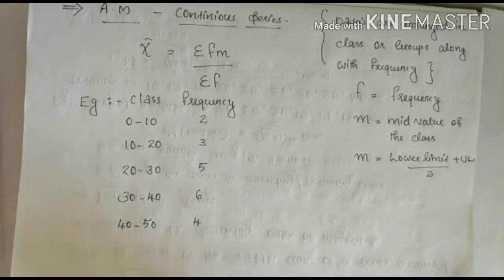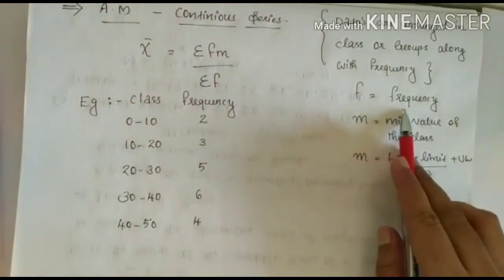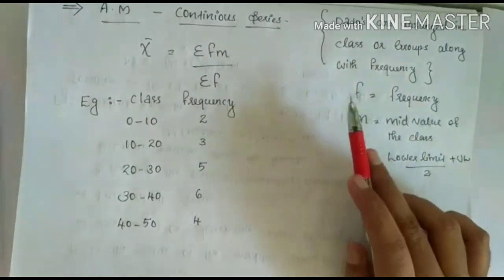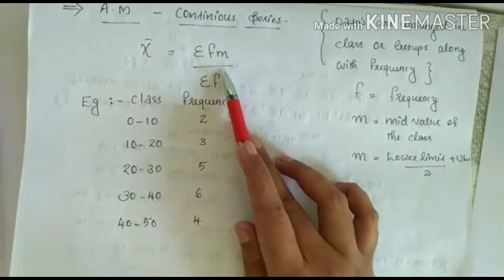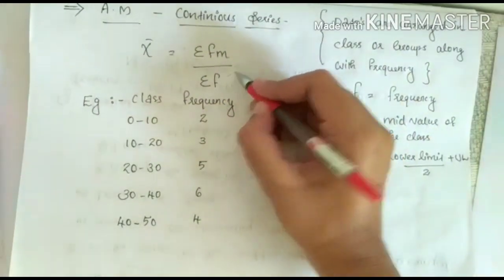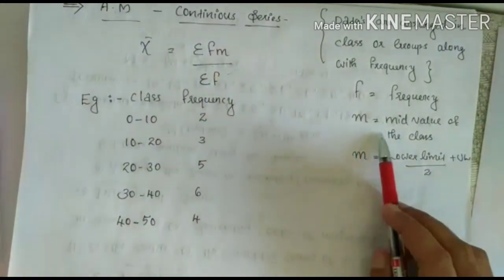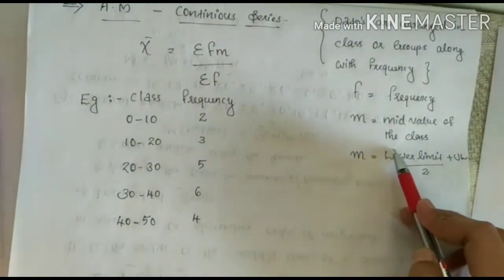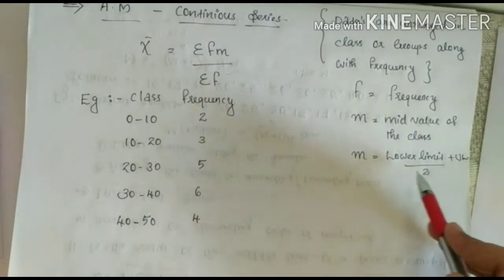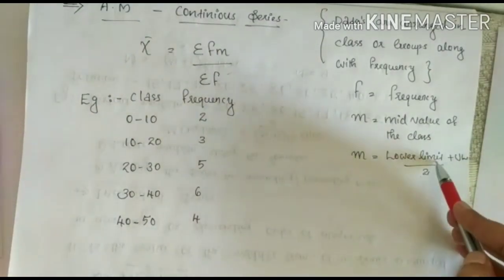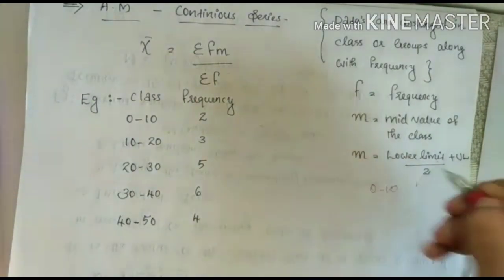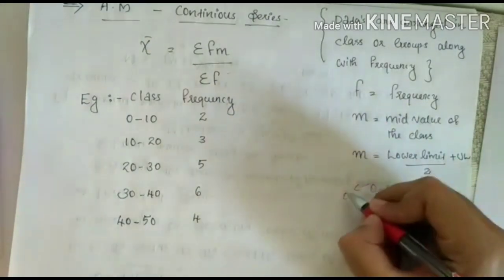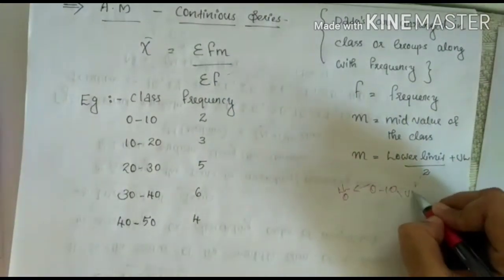What is continuous series? The data is arranged in classes or groups along with corresponding frequencies — that is known as continuous series. In continuous series, the equation used is sigma FM divided by sigma F. Here, M is the mid value of each class. The mid value is calculated as: lower limit plus upper limit divided by 2. For example, for the class 0 to 10, the lower limit is 0 and the upper limit is 10.